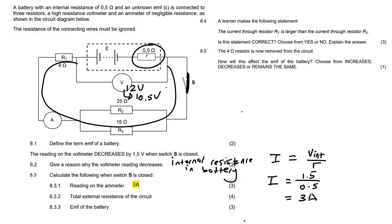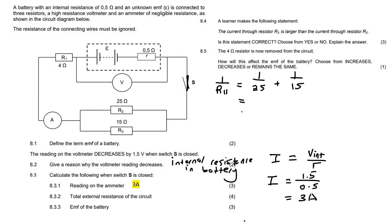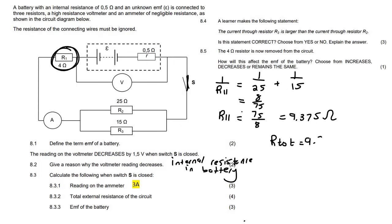The next question asks us to calculate the total external resistance. The external resistors are the 4 ohm resistor in series, plus the 25 ohm and 15 ohm resistors in parallel. For the parallel combination: 1 over R equals 1 over 25 plus 1 over 15, giving 8 over 75, so R parallel equals 75 over 8, which is 9.375 ohms. Adding the 4 ohm series resistor: total external resistance equals 9.375 plus 4, which equals 13.38 ohms.